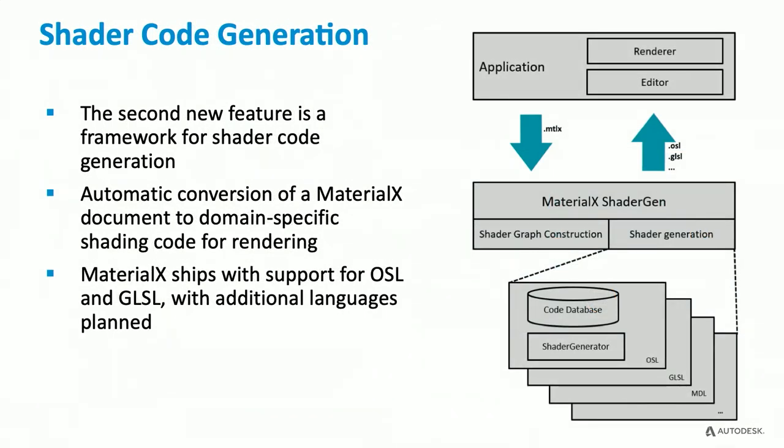The second new feature is a general-purpose framework for shader code generation, which makes it straightforward to convert a MaterialX document into domain-specific shading code in a language such as OSL or GLSL. This marks a fundamental shift for MaterialX — an application no longer needs to encode the rules of MaterialX or the details of the node set it's using. By converting a material directly to shader code, it can render any content the material contains, even documents using completely custom nodes, so long as those custom node definitions are available at shader generation time.